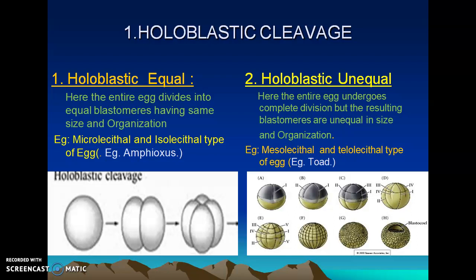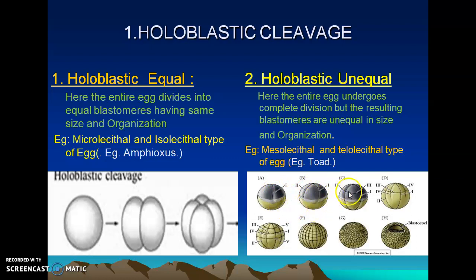We can divide complete or holoblastic cleavage into two different types: holoblastic equal and holoblastic unequal. Both are complete cleavages but differ in the size of the blastomeres produced. In holoblastic equal cleavage, the egg divides completely and the resulting blastomeres are equal in size. This is generally found in amphioxus and is exhibited by microlecithal and isolecithal types of egg. In holoblastic unequal cleavage, the division is complete but the blastomeres produced are unequal in size.